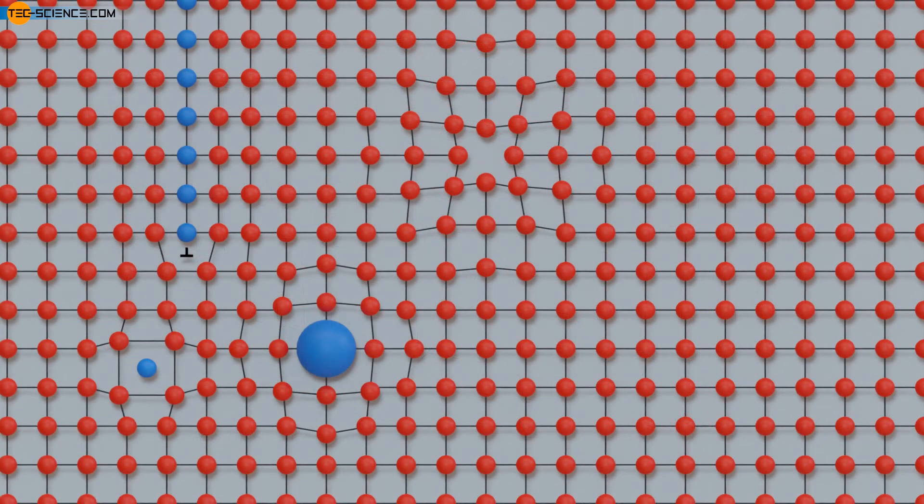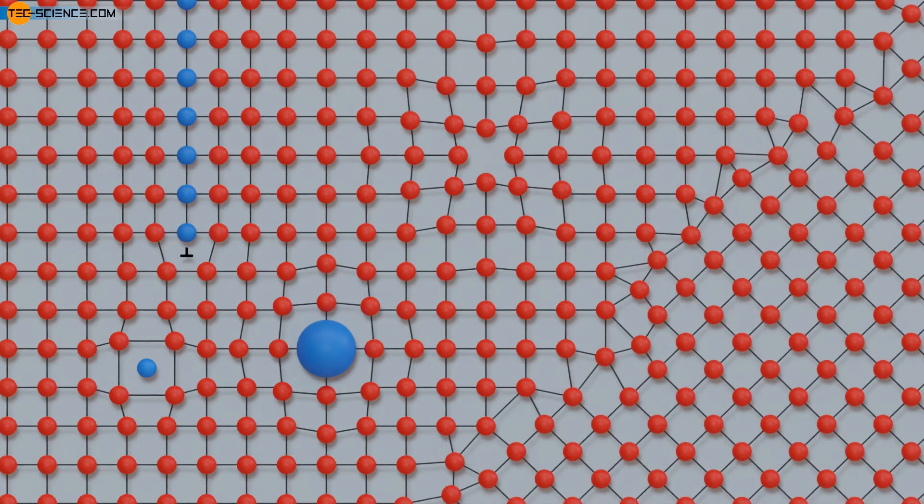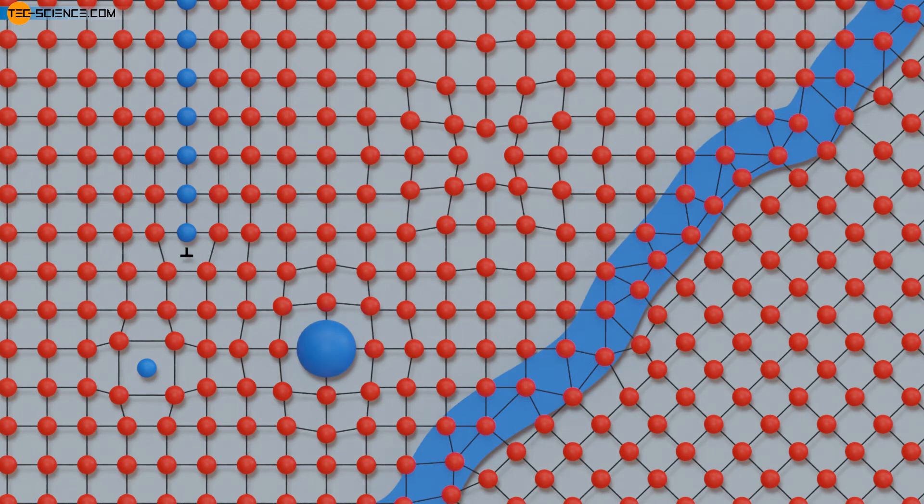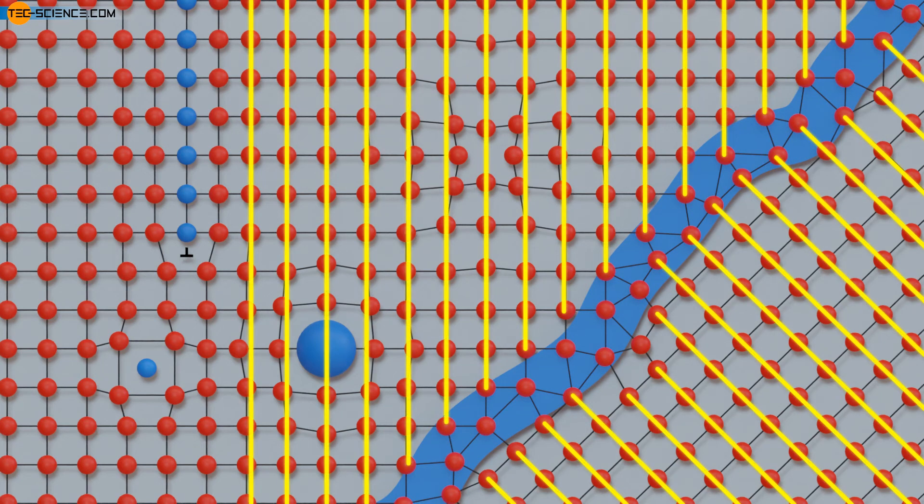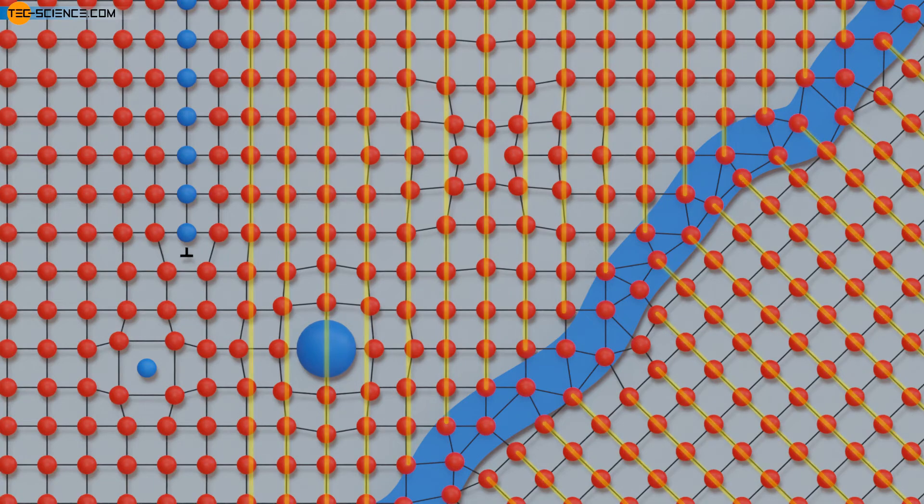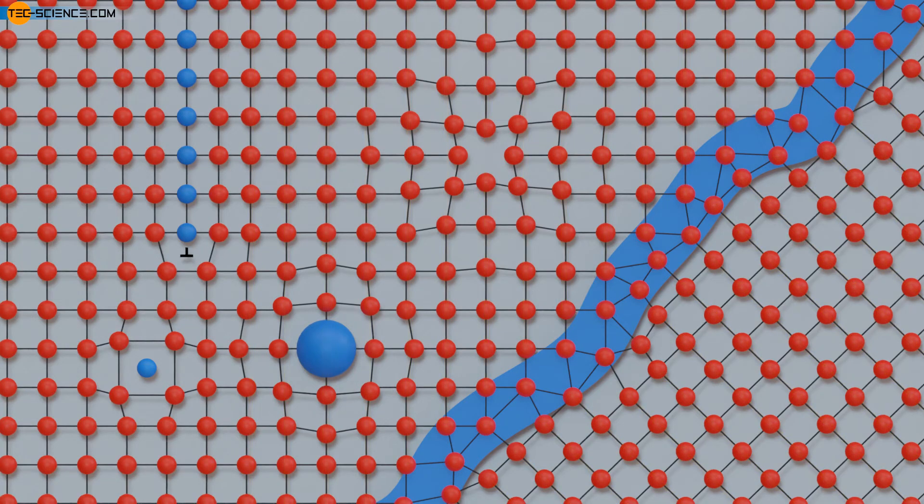Compared to the linear crystallographic defects just described, planar defects disturb the lattice structure within a larger area. These defects are also called two-dimensional crystallographic defects. Grain boundaries are an example of planar defects. Grain boundaries define regions in a metal structure within which the lattice has a uniform spatial orientation. These boundaries are structureless regions with a thickness of the order of a few atomic distances. The uniformly oriented regions themselves are called grains or crystallites.